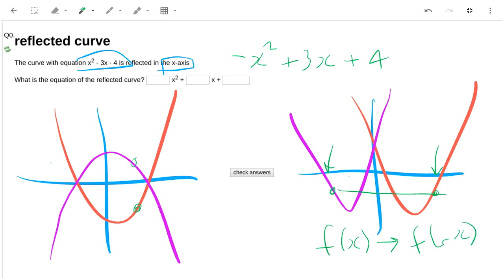So for this function, the x-squared would stay the same because the minus is squared. But the 3x would become a plus and the minus four would stay the same.